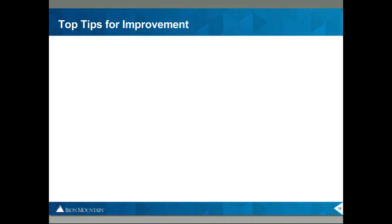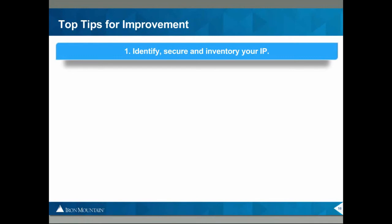To summarize my top tips for improving protection of your intellectual property, particularly for those in the software business: One, know what it is you own. Identify, secure, and inventory your IP — including what trade secrets you own, what your most valuable trade secret list is, what the risks are if it's taken, where it is on your IT system, who's handling it. Inventorying your IP is essential to know what you're actually supposed to be protecting.